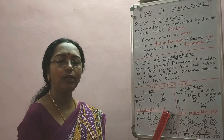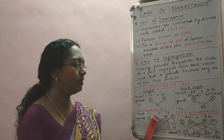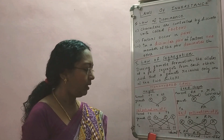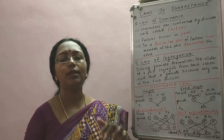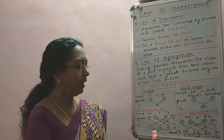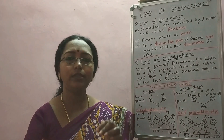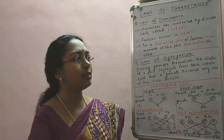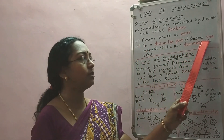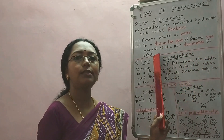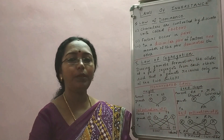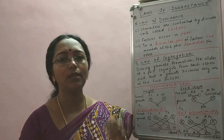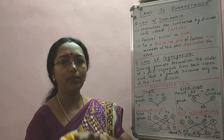To confirm this, Mendel did self-pollination of F1, where the parents are the same. Then gametes are formed again, and after F1 he got F2: three tall plants and one dwarf plant. The character dwarf comes back — in one generation it is suppressed, in the other it is expressed. So in a dissimilar pair of factors, one member dominates the other. The dominating member forms the dominant trait, and the suppressed member forms the recessive trait. That is the law of dominance.